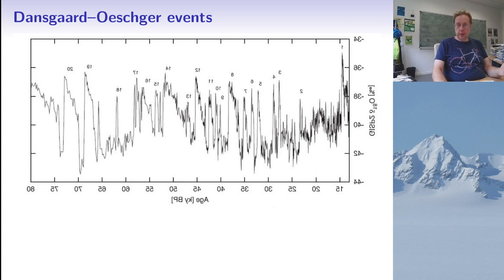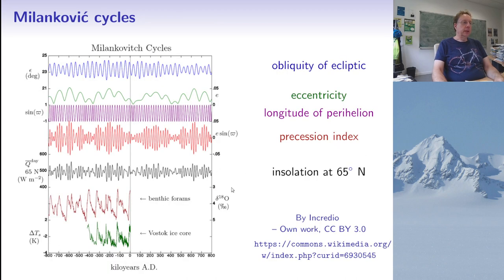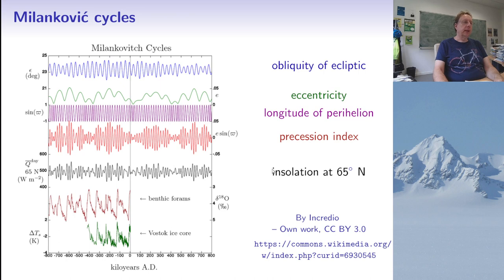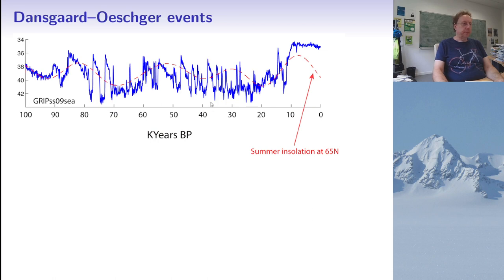I also talked about causes of these climate changes. One of them is Milankovitch cycles — changes in the orbit of the Earth, the major factor being the eccentricity of the orbit. Changing the orbit changes the amount of sunlight that hits the Earth and has an impact on climate. This correlates quite well with changes on scales of a hundred thousand years. But when you look in more detail at the Dansgaard–Oeschger events, the reconstructed temperature follows the average solar insolation, but there's something more going on.